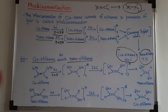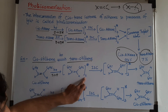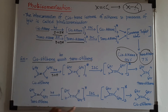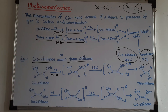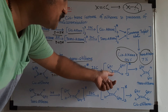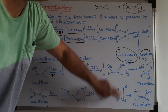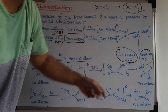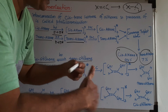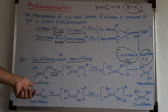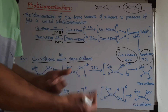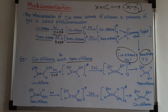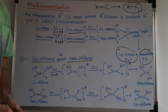When stilbene is irradiated with light of a certain wavelength, it undergoes a pi to pi* transition — one electron from the pi bond is excited. The molecule is first converted to the singlet excited state, then undergoes inter-system crossing to form the triplet excited state. This triplet state is a common biradical for both cis and trans stilbene. Rotation around the carbon-carbon single bond then occurs, converting cis to trans and trans to cis. This is photoisomerization.